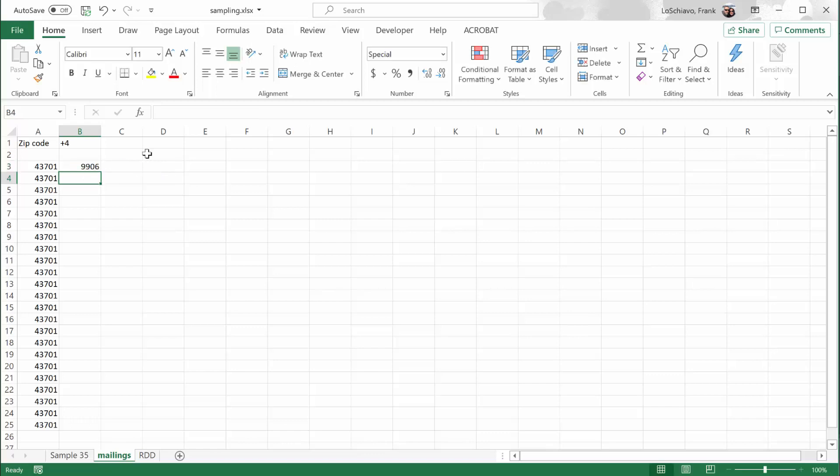Close my parentheses, hit enter, and there it randomly selected a four digit number. So now we have a zip code plus four digits, and we could randomly mail our questionnaire, our survey, whatever it is, to that area.